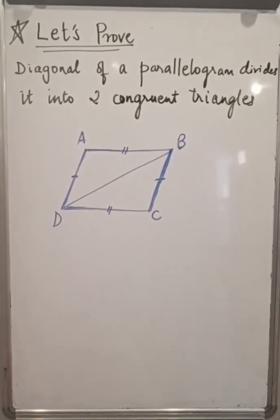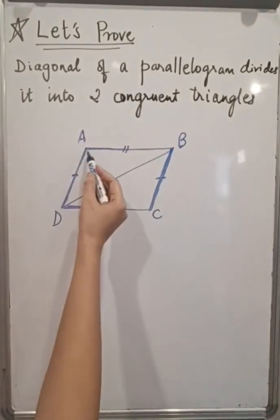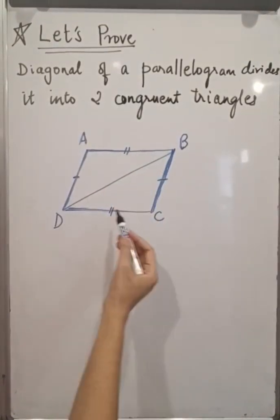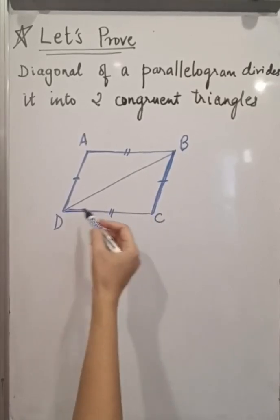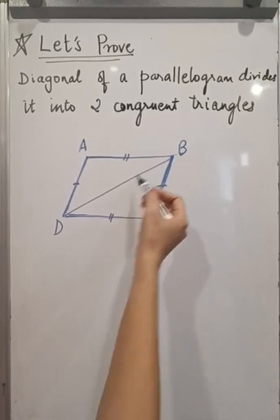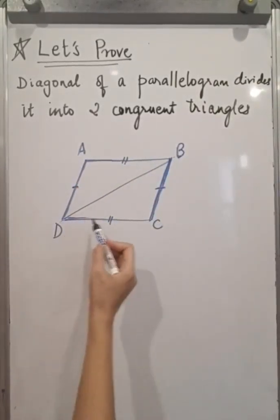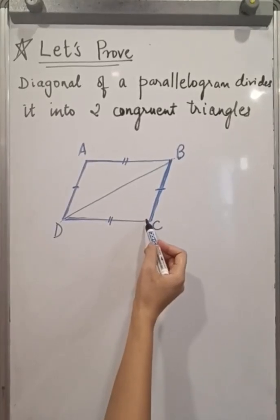In the given figure, ABCD is a parallelogram. Line AB is parallel to line CD. DB is a diagonal. We can treat this diagonal like a transversal line and AB and DC are the two parallel lines.